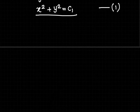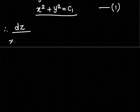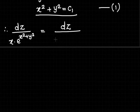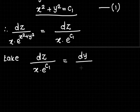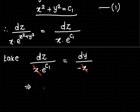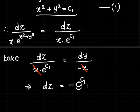Using x² + y² = c₁ in the third ratio: dz / (x · e^(x²+y²)) becomes dz / (x · e^(c₁)). We equate this with dy/(−x) so that x cancels from both sides. We can rewrite the equation as dz = −e^(c₁) · dy. This is variable separable form.